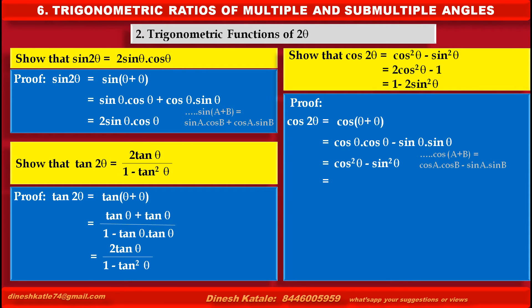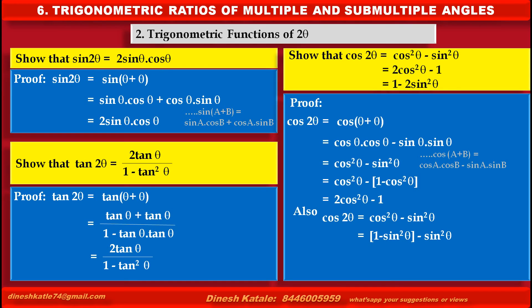Now to prove the next statement: starting again from cos square theta minus sin square theta, we replace sin square theta by 1 minus cos square theta, which gives cos square theta minus 1 plus cos square theta, that is 2 cos square theta minus 1, which is the second required statement. Also, replacing cos square theta by 1 minus sin square theta in cos square theta minus sin square theta gives 1 minus sin square theta minus sin square theta, that is 1 minus 2 sin square theta.